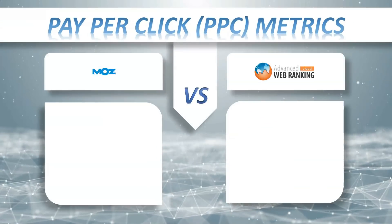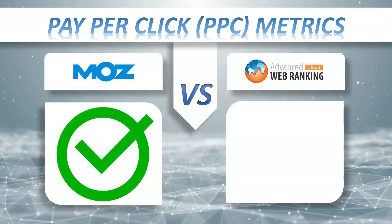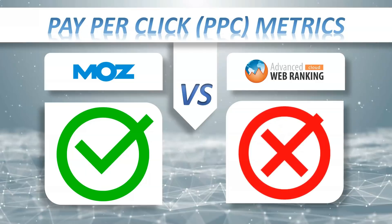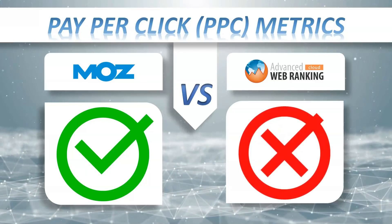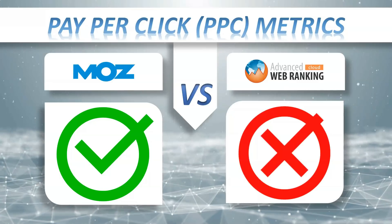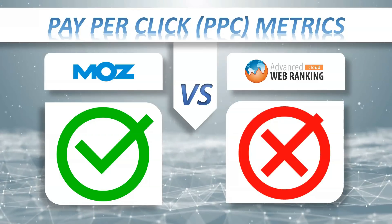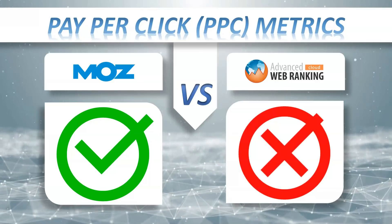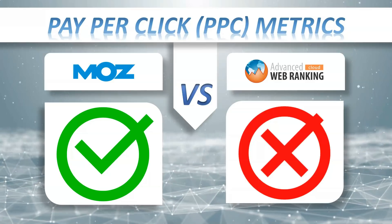Pay-Per-Click Metrics: MostPro yes, AWR Cloud no. The PPC keyword tool offers an easy way to plan and set up an optimized Google Ads campaign. Users can organize keywords at the campaign and ad group level, quickly set negative keywords, and export the campaign to seamlessly import into the Google Ads editor.